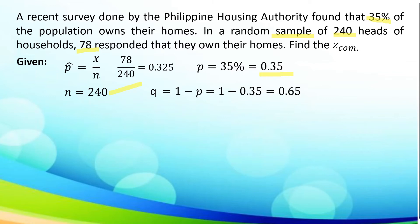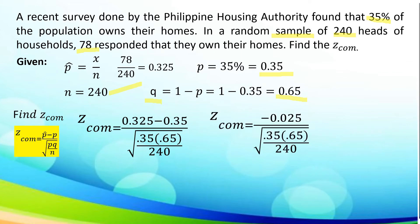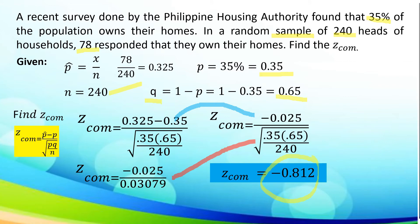And our Q, which is 1 minus P, where P is equal to 0.35, so 1 minus 0.35 is equal to 0.65. To find Z-sub-com, we use the formula: P-hat minus P, all over the square root of PQ over N. Substituting the given: our P-hat is 0.325, our P is 0.35, divided by the square root of 0.35 times 0.65 all over 240. 0.325 minus 0.35 equals negative 0.025. And the square root of 0.35 times 0.65 divided by 240 is 0.03079. Dividing negative 0.025 by 0.03079, we have Z-com equal to negative 0.812.